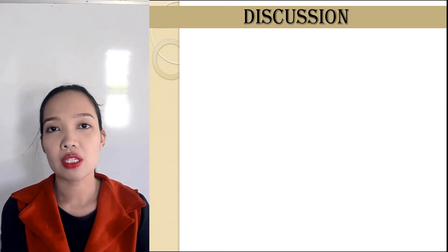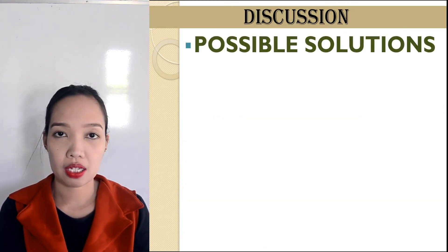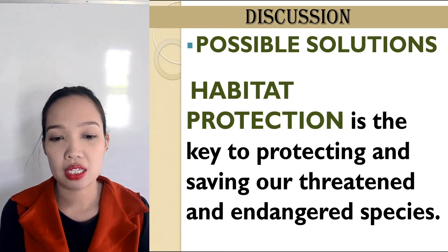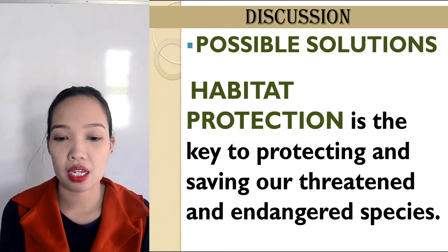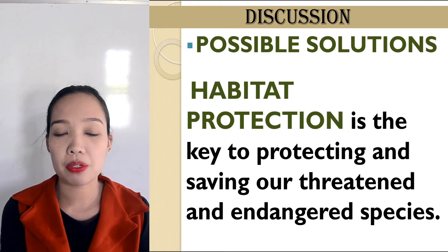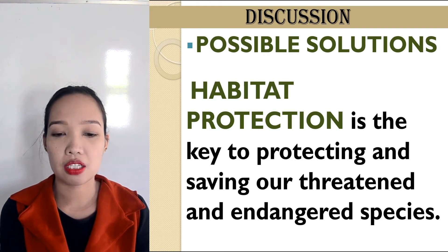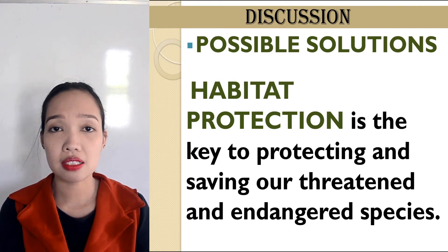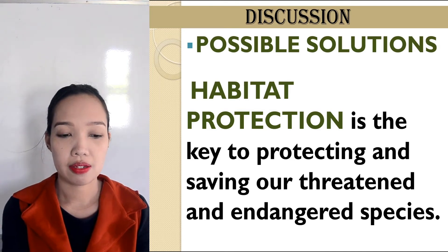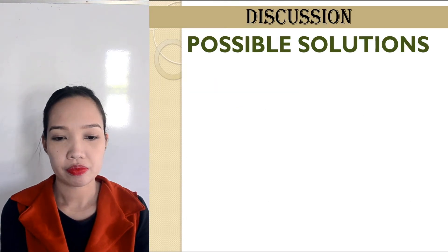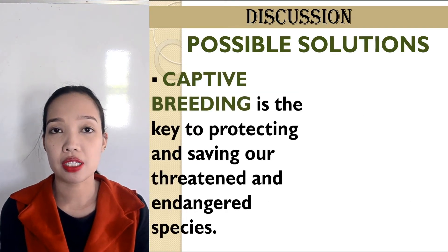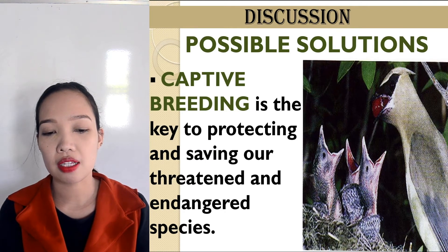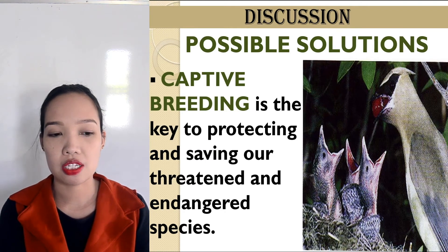What are the possible solutions to protect biodiversity? Number one is habitat protection. Habitat protection is the key to protecting and saving our threatened and endangered species. Captive breeding is also the key to protecting and saving our threatened and endangered species.